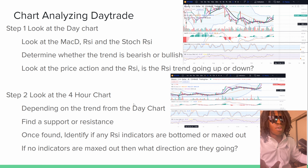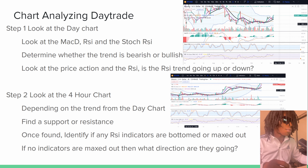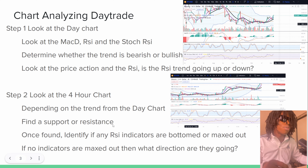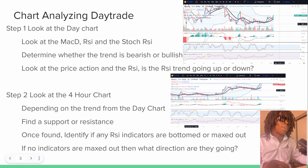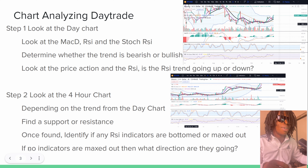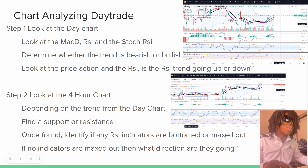Now look at the four-hour chart. Depending on the trend from the day chart, find the support or resistance. Once found, identify if any RSI indicators are at the bottom or maxed out. If no indicators are maxed out, then what direction are they going?